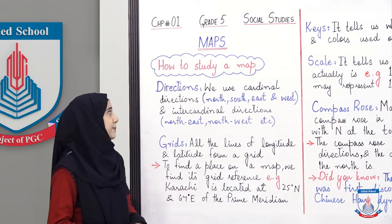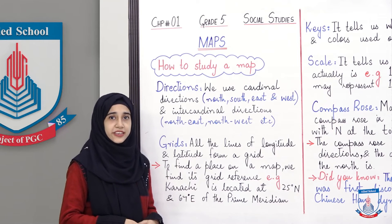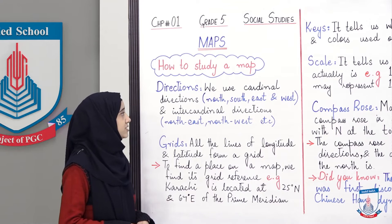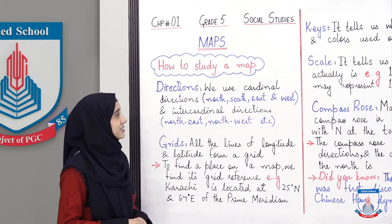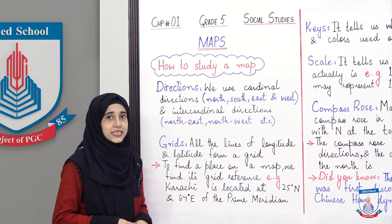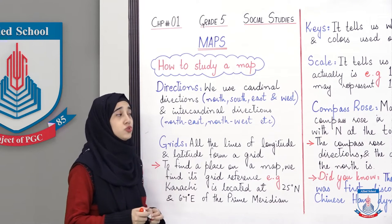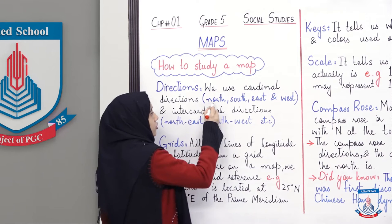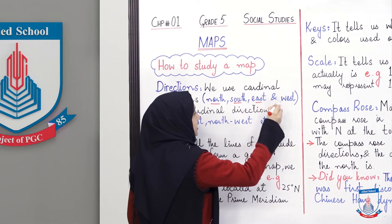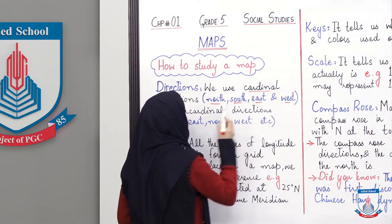How to study a map? Toh sab se pahle hum baat kar liethe hai directions ki. We use cardinal directions — that is north, south, east and west. Yianni ki kisi bhi map ko study karne ke liye hum directions use kertethe hai. Aur joh main directions hoti hai — north, south, east and west — in ko hum kehethe hai cardinal directions.